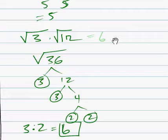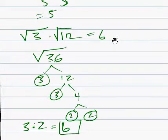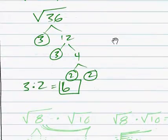So 3 times 2 equals 6. So that's what this equals. This one equals 5. Do one more.